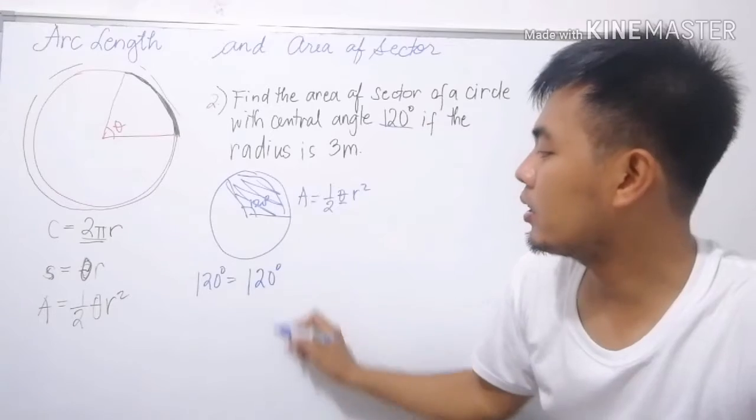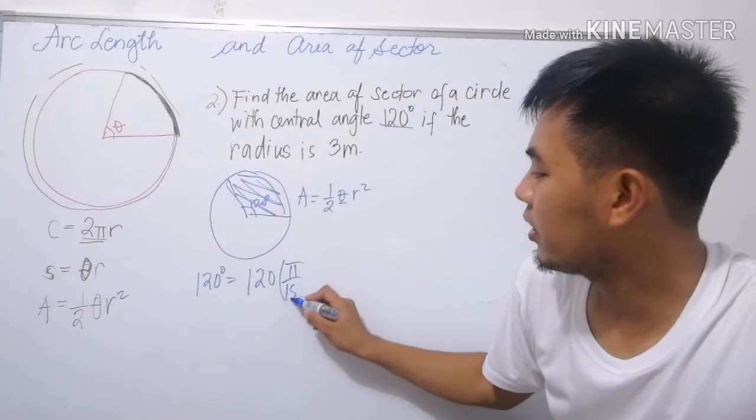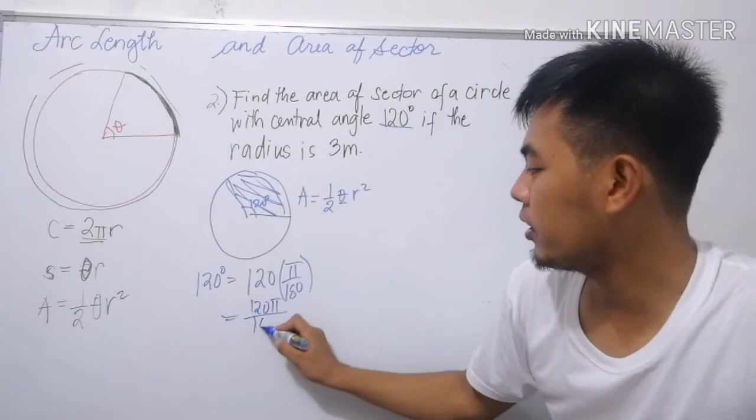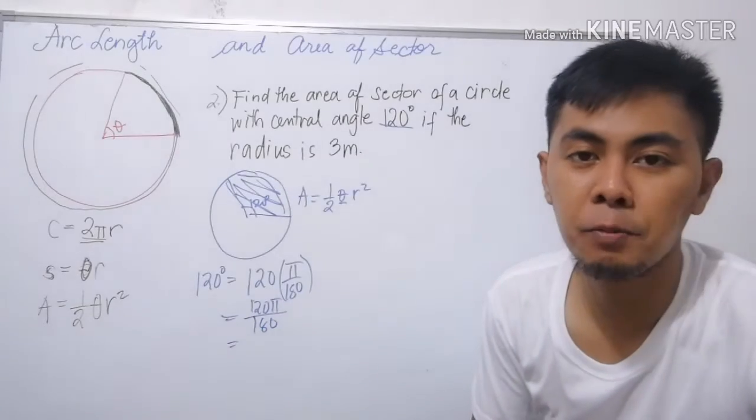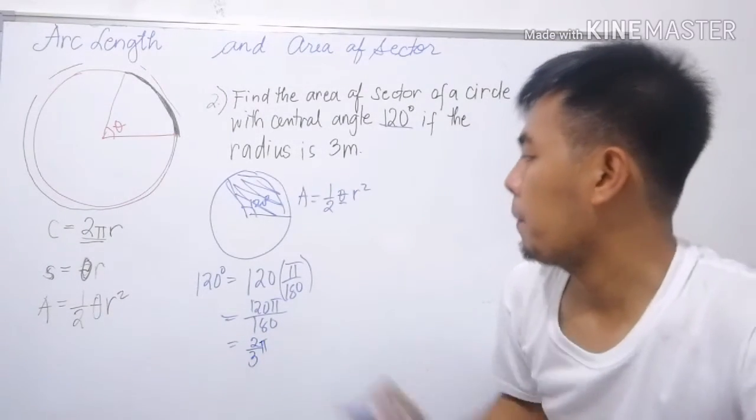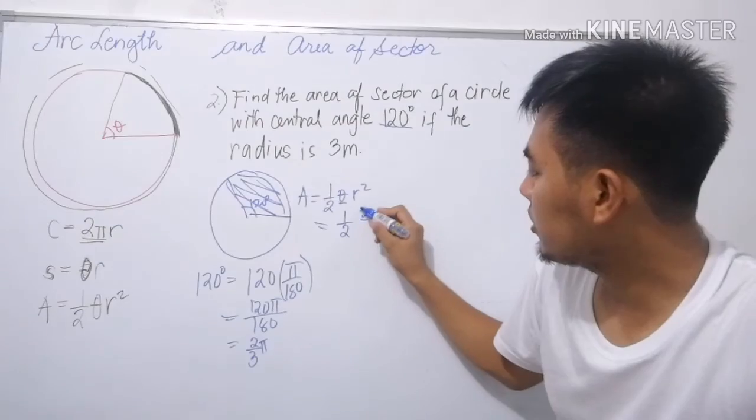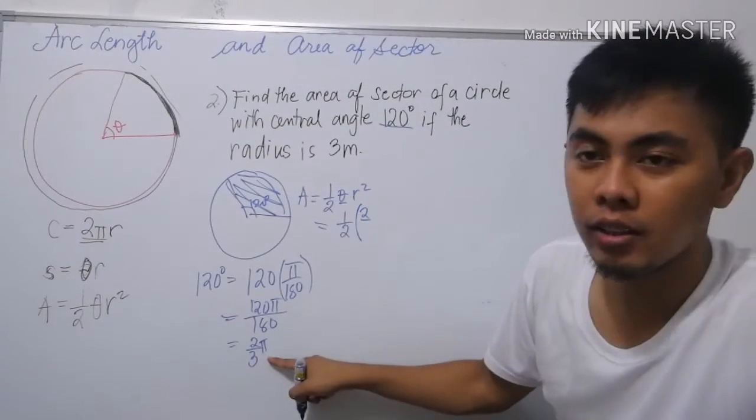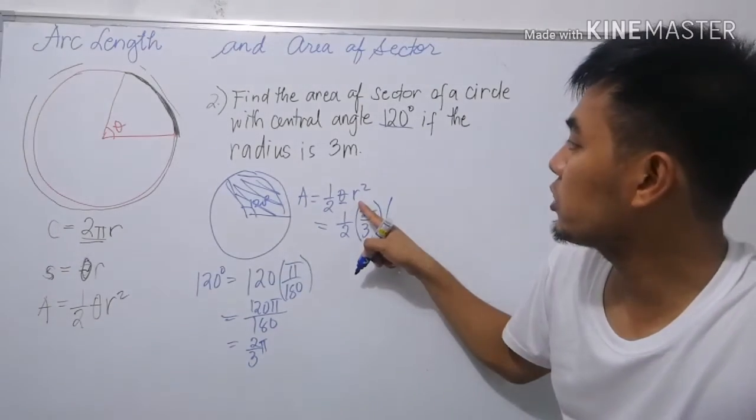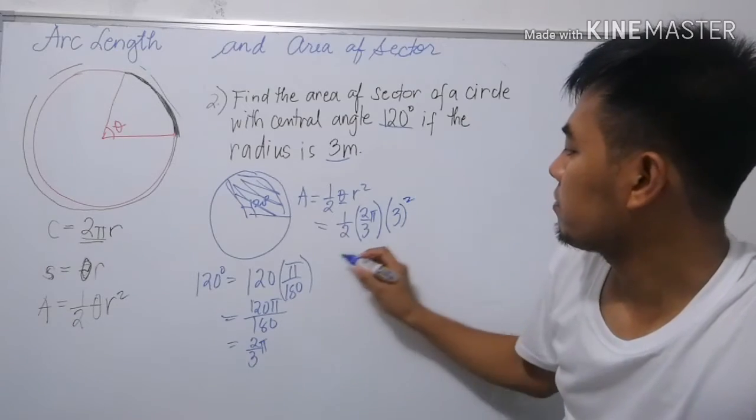We have 120 degrees times π over 180. What is the lowest term of 120 over 180? This is 2π over 3. So theta is 2π over 3. And then, the radius is 3 meters.